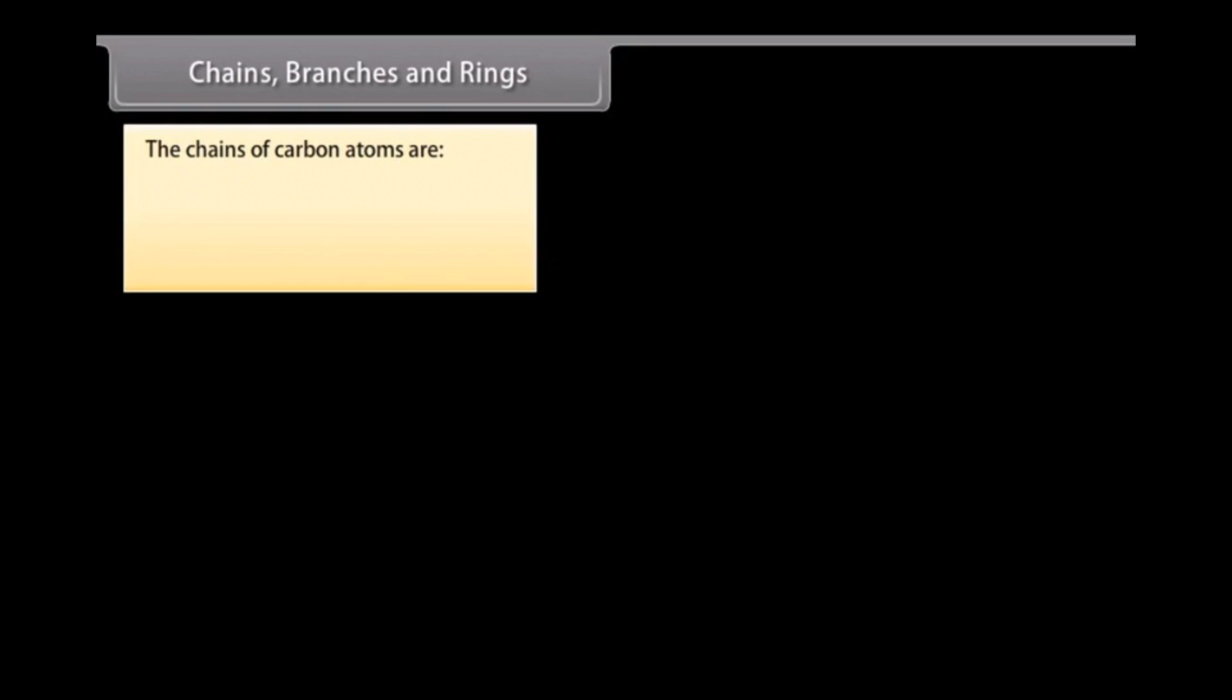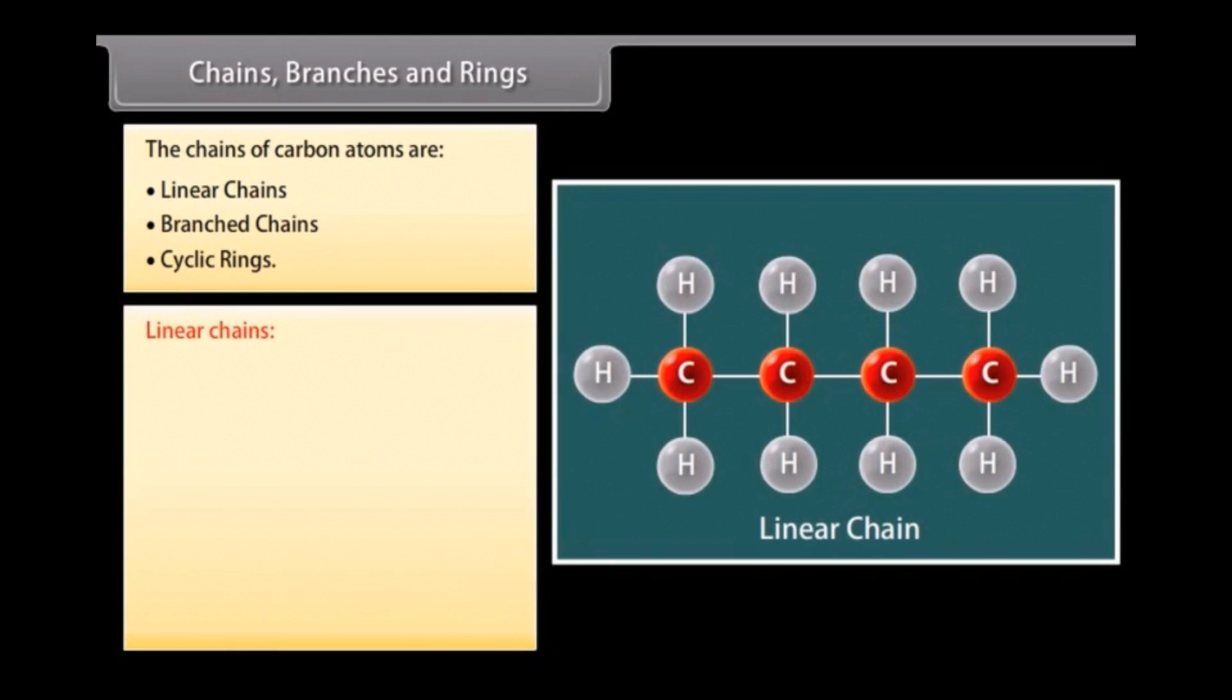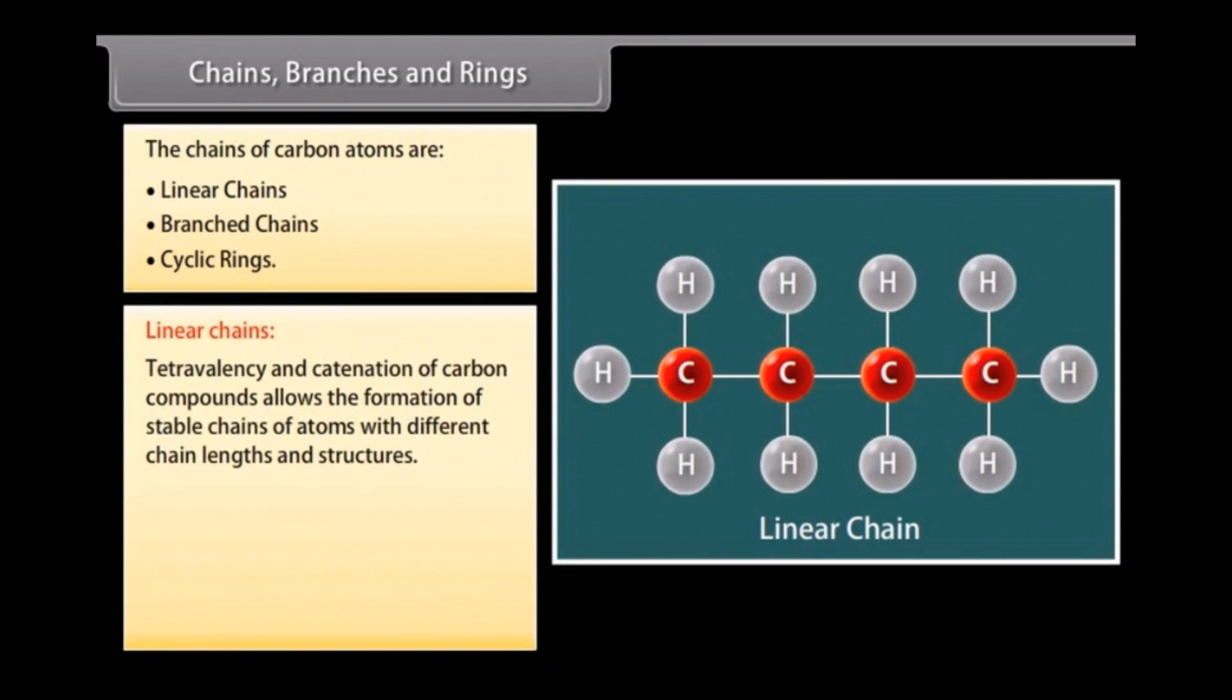Chains, branches, and rings. Linear chains. Tetravalency and catenation of carbon compounds allows the formation of stable chains of atoms with different chain lengths and structures.